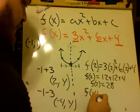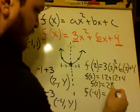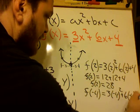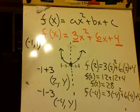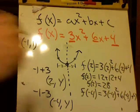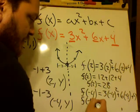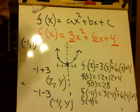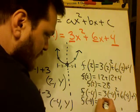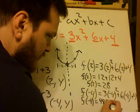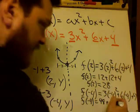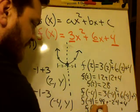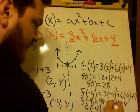F of negative 4 equals 3 times negative 4 squared plus 6 times negative 4 plus 4. Am I losing you? I still got you there. So F of negative 4 is going to be equal to, well that's a positive 16, positive 16 times 3 is 48, plus negative 24 plus 4. So F of negative 4 is equal to 28.